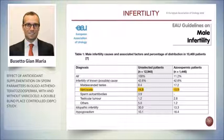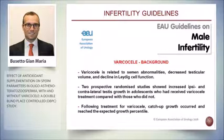Can varicocele treatment improve fertility? Looking at the guidelines, male infertility is related to causes we know and idiopathic causes — about 30% are idiopathic, meaning we don't know the cause. In the other 70%, 15% is related to varicocele. According to the guidelines, varicocele is the first known cause of male infertility. Guidelines confirm that varicocele is related to semen abnormalities, decreased testicular volume, and decline in Leydig cell function, confirming the importance of varicocele in fertility.